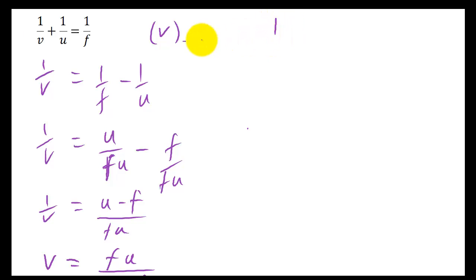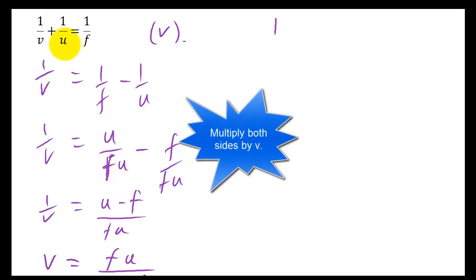So that just leaves me with, if you times this by V, you're just left with 1. Times this by V, you get V over U. Makes it V times as big. Times this by V, you also get V over F.